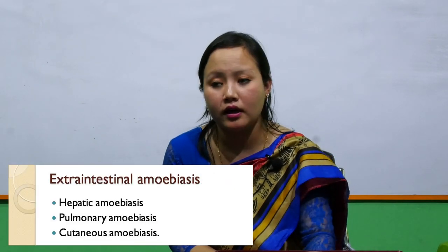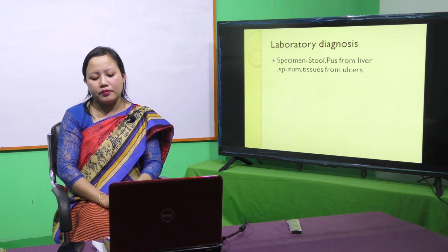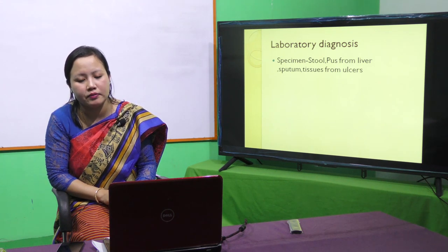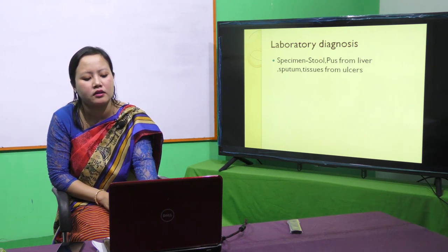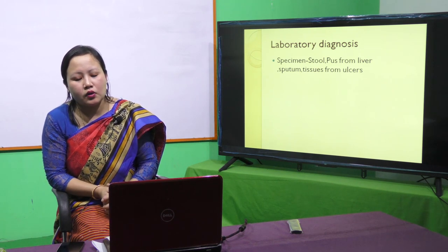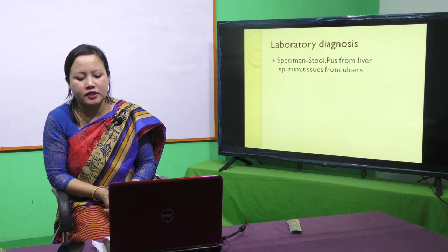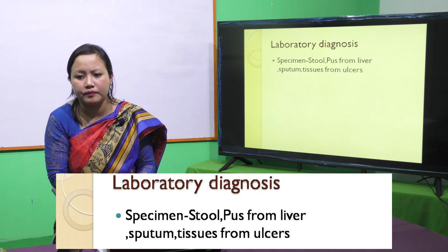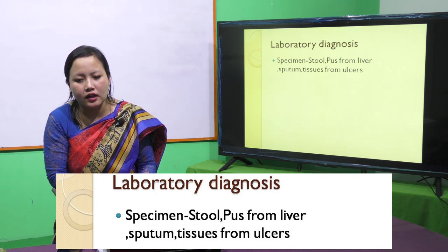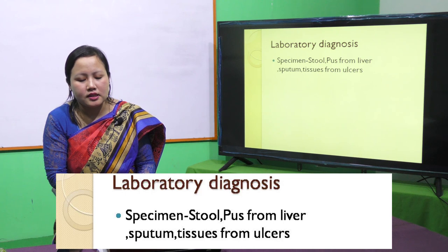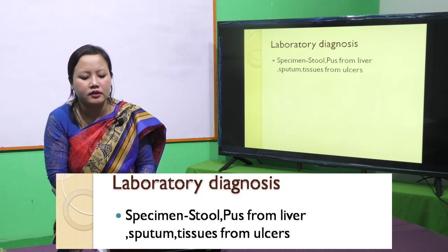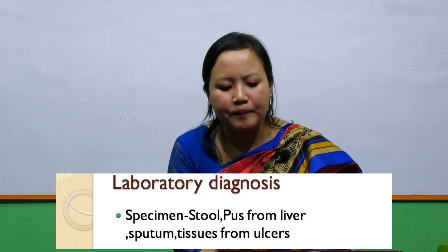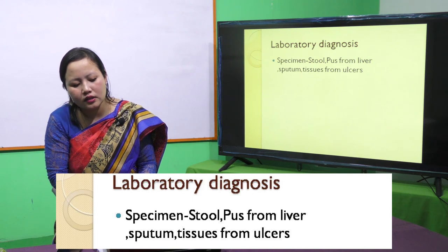For laboratory diagnosis of Entamoeba histolytica infection, the first step is specimen collection. If it is a dysentery patient, we take a stool sample. If it is extra-intestinal amoebiasis involving the liver, we take a pus sample. If the lungs are involved, we take a sputum sample.